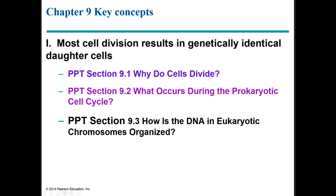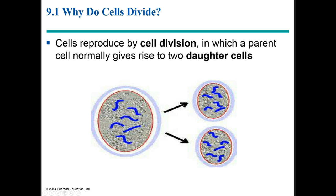This first section, why do cells divide, will also be combined with what occurs during the prokaryotic cell cycle. Cells reproduce by cell division, in which a parent cell normally gives rise to two daughter cells. Notice the single cell in this figure has divided into two cells. Also notice that the chromosome number remains the same in the daughter cells as it was in the parent cell. This is the essence of what happens in mitotic cell division.